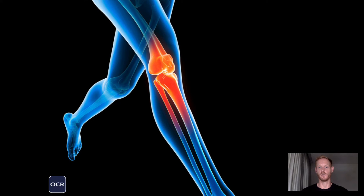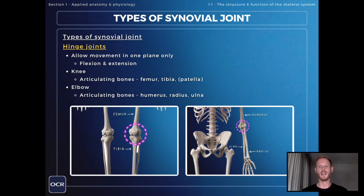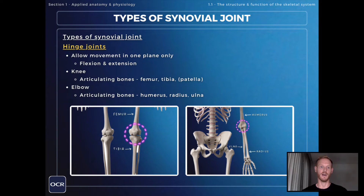There are two types of synovial joint that you need to know about. The first is hinge joints. Hinge joints allow movement in one plane only, so we're talking about flexion and extension — we'll look at the types of movement in the next lesson. The two hinge joints you need to know are the knee and elbow, and specifically you need to know the articulating bones, or the bones that join to make up each joint.